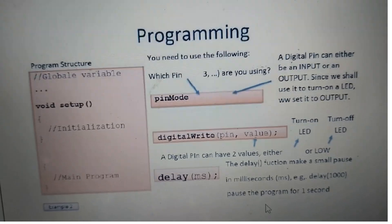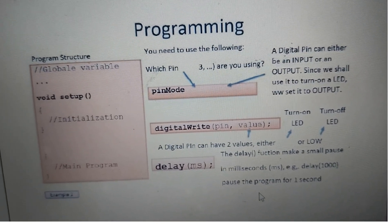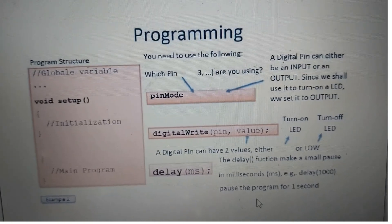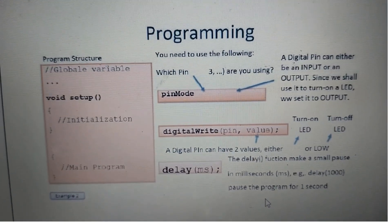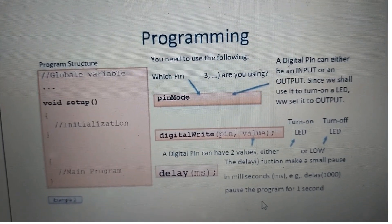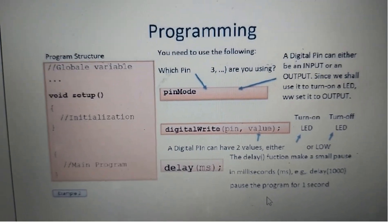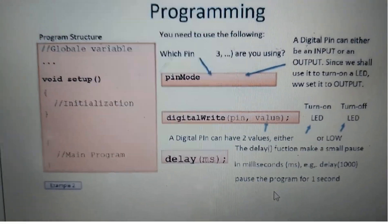The delay function makes a small pause. The value is low means off, high means on. Delay is given in milliseconds - generally we give one thousand milliseconds, which means one second of time.